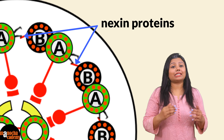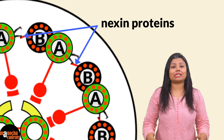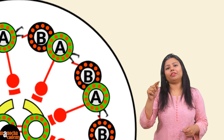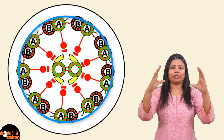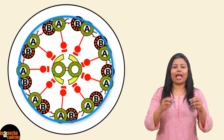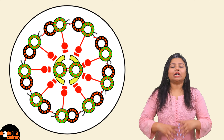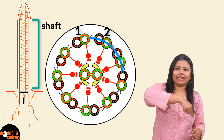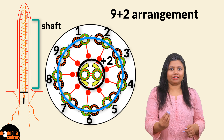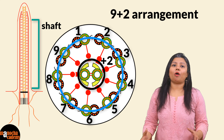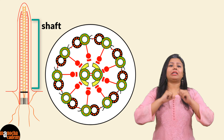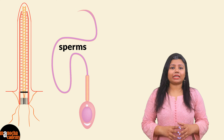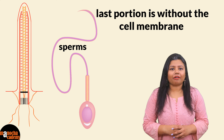To keep the doublets connected with each other, another protein called nexin — also known as the linker — connects the B subunit of one doublet with the A subunit of the next, keeping the entire peripheral layer intact. So the flagellar shaft is made up of tubulin proteins in a nine plus two arrangement: two subunits at the center and nine doublets surrounding it. The entire shaft is covered by the cell membrane, except possibly the last portion in some cells such as sperm.